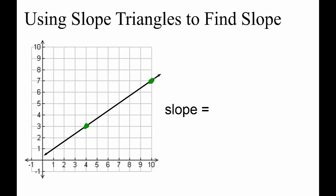Now it's time for a slope triangle. Going from left to right, we need to go up 4 and over 6. So the slope is 4 over 6. After simplifying we get 2 thirds.